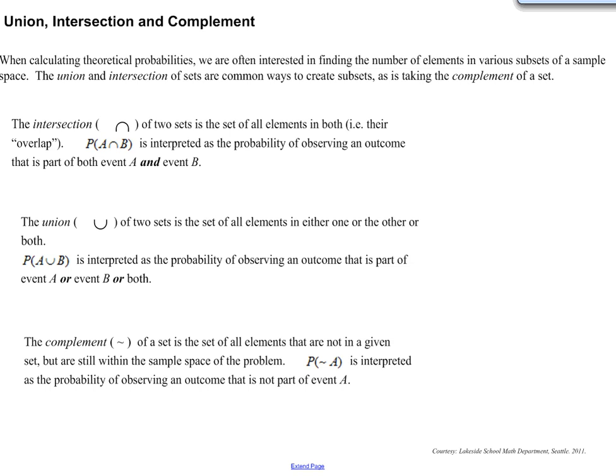So basically, when calculating theoretical probabilities, we are often interested in finding the number of elements in various subsets of a sample space. The union or intersection of sets are common ways to create subsets, as is taking the complement of a set. All right, that's a lot of words, don't worry. It's not that complicated.